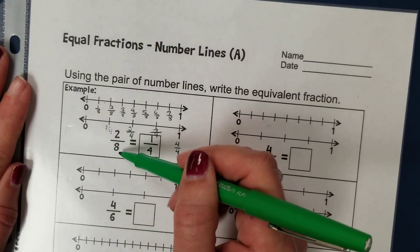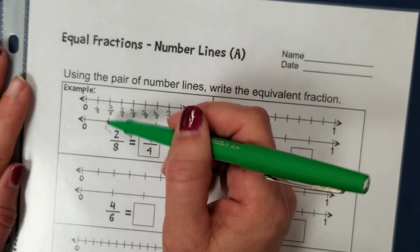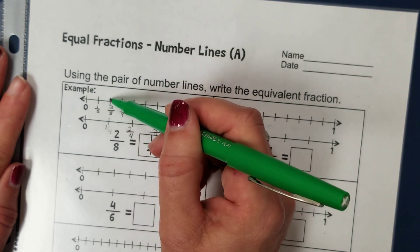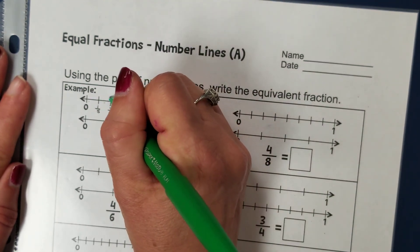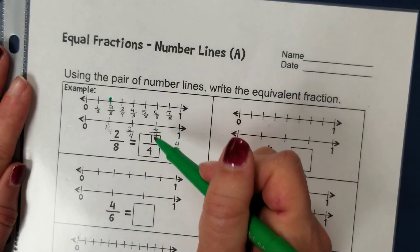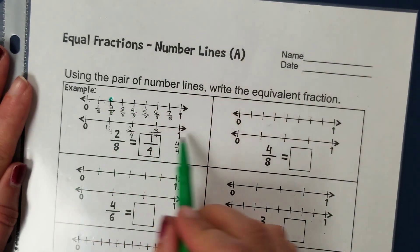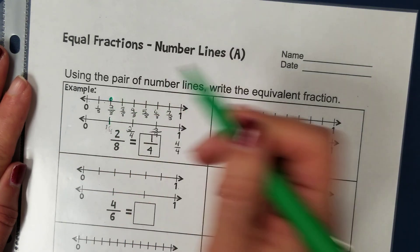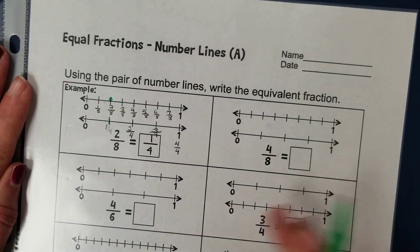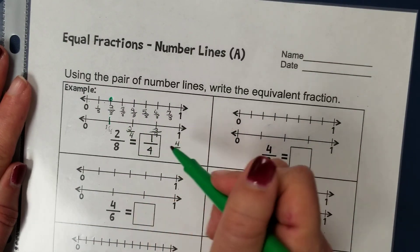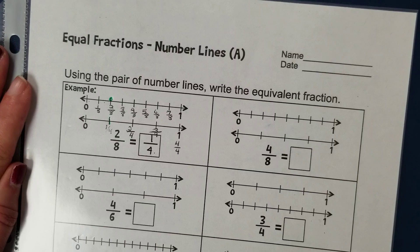And then they want us now to go to two-eighths. So if I count from zero, one-eighth, two-eighths, that lands me right here at this point. Now on my second number line, I can see that this line lines up perfectly with that two-eighths. To figure out what the fraction is over here for the answer, I first am going to start by identifying that denominator.